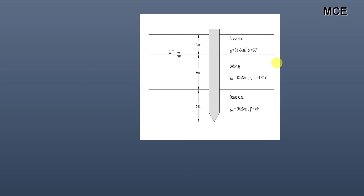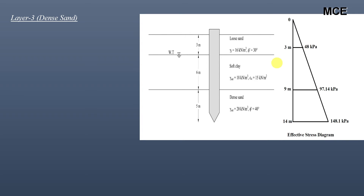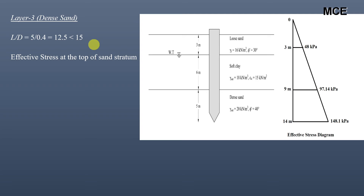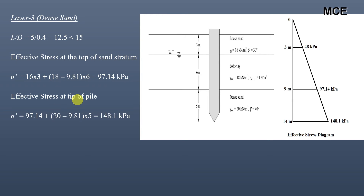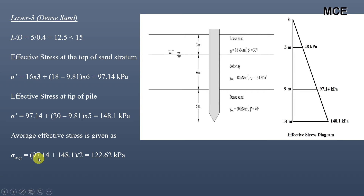The next soil layer is dense sand. The arching effect is again present, so we check l/d. The length of the pile in this layer is 5 meters and the diameter is 0.4, so l/d = 12.5, which is less than 15. This means effective stress will again increase linearly. The effective stress at the top of the dense sand stratum is 16 × 3 + (18 − 9.81) × 6 = 97.14 kPa. The effective stress at the pile tip is 97.14 + (20 − 9.81) × 5 = 148.1 kPa. The average effective stress is (97.14 + 148.1) / 2 = 122.62 kPa.